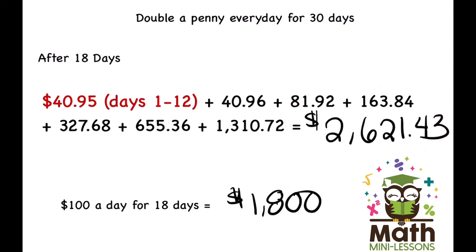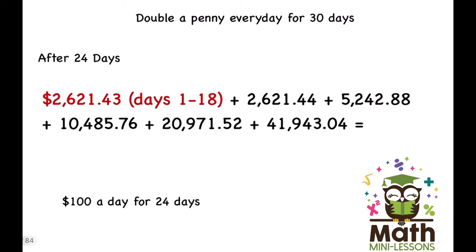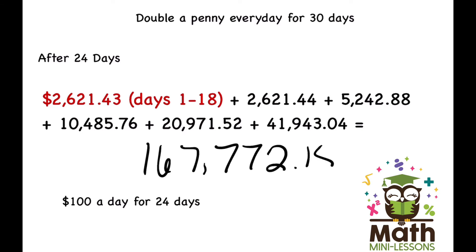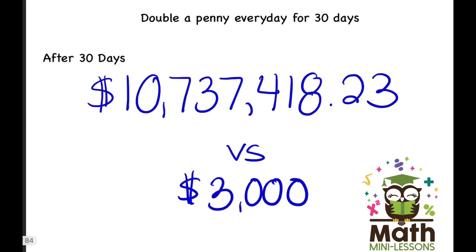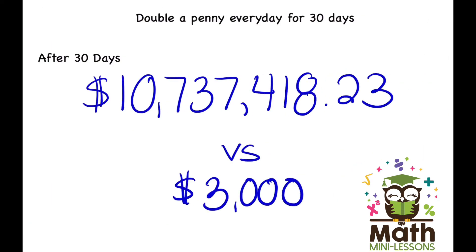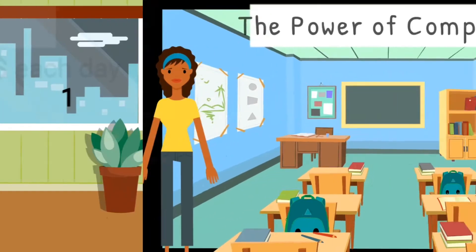Now it's going to rapidly grow. By the end of day 24, I have $167,772.15 compared to just $2,400. That's the power of compounding — it starts to rapidly grow once time passes. And by day 30, you have over ten million dollars: $10,737,418.23 versus just $3,000.